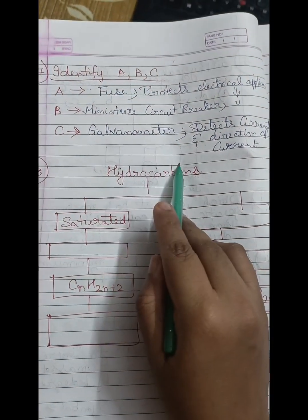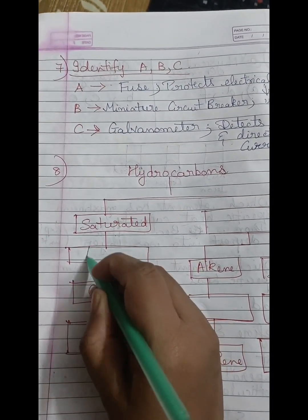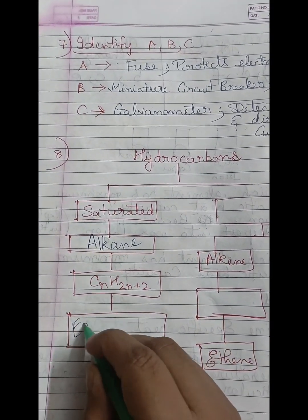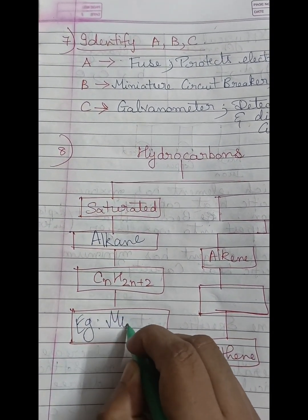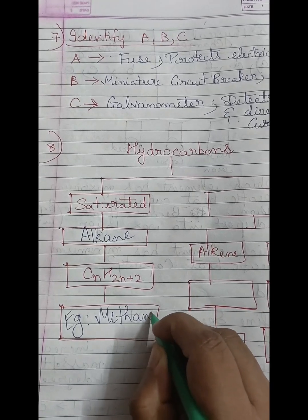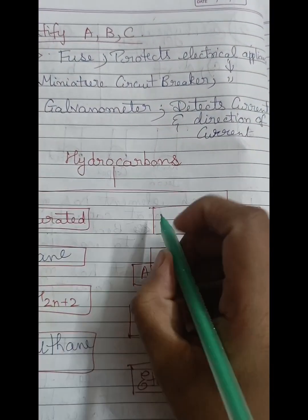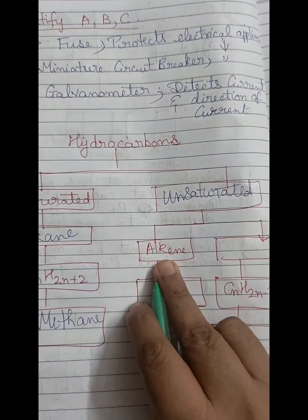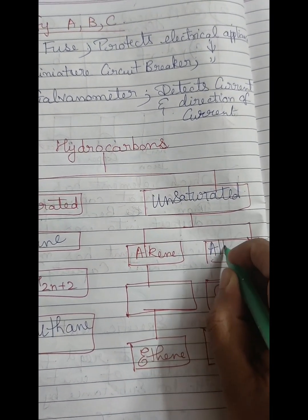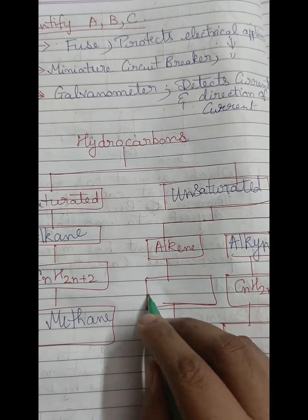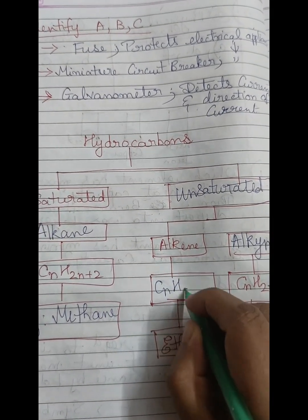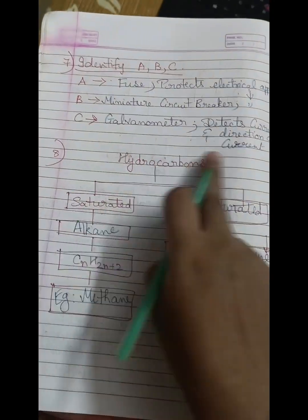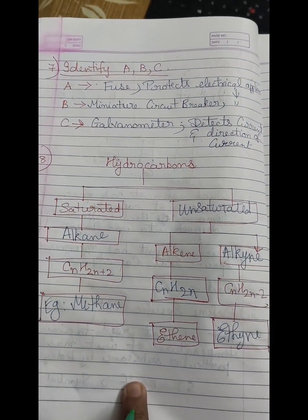Hydrocarbons classification: saturated hydrocarbons are alkanes, unsaturated hydrocarbons include alkenes and alkynes. Alkynes have the general formula CnH2n-2; an example is ethyne (acetylene).